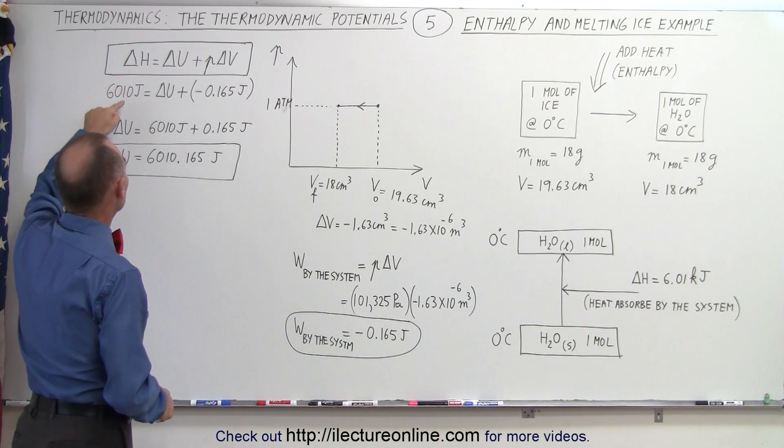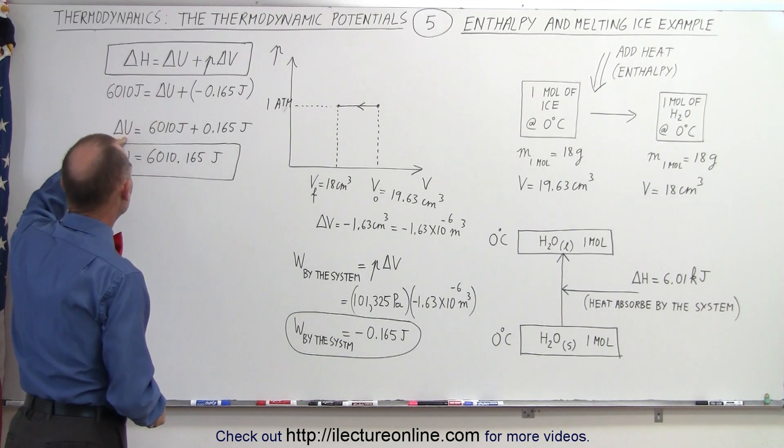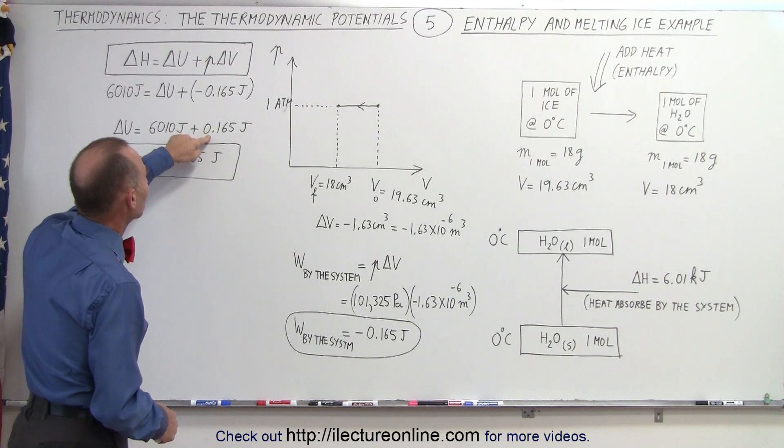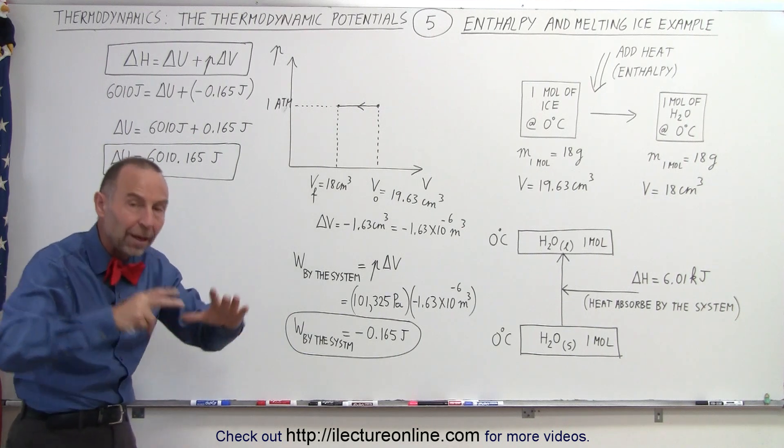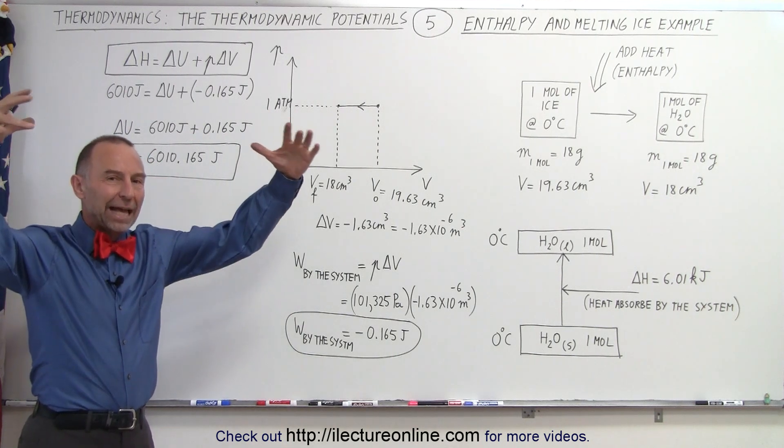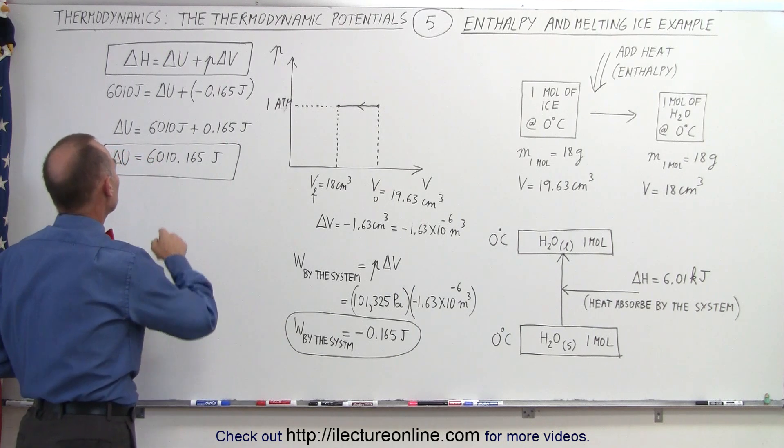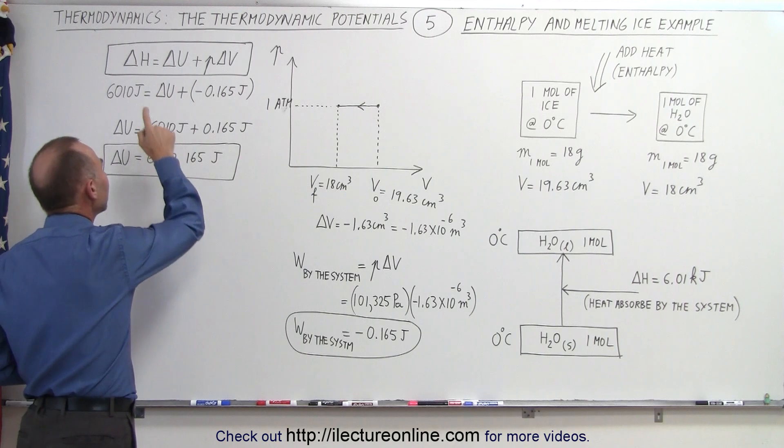So then if we put the delta H, the enthalpy over here, and we then solve for delta U, we can see that delta U is equal to 6,010 joules plus 0.165 joules because of the heat added to the system by the work done of the atmosphere onto the system. So that adds additional internal energy, so the total internal energy change is actually a little bit more than the enthalpy.